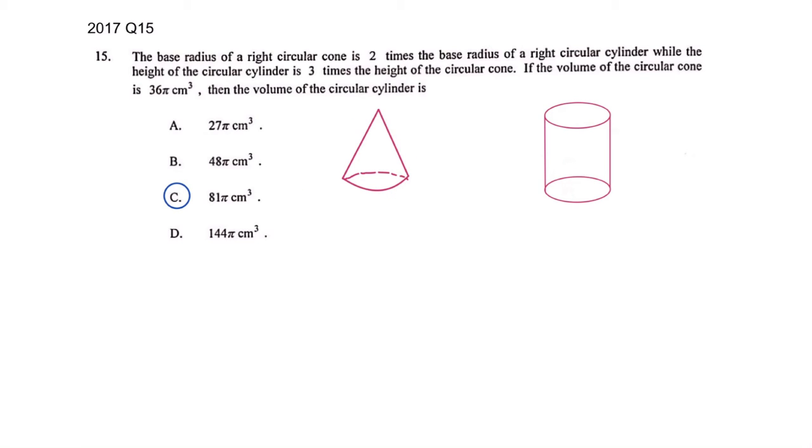It was not in the question paper directly but we have to translate this English into maths first. The base radius of the right circular cone is two times the base radius of the right circular cylinder. So the cylinder radius let's say r and this one will be 2r because it's two times of that.